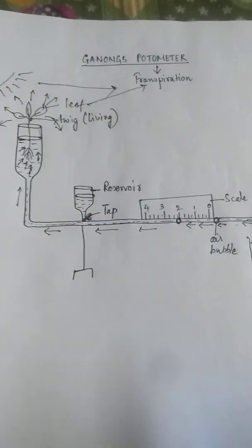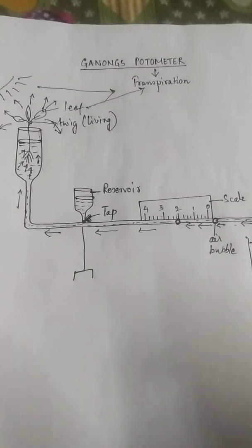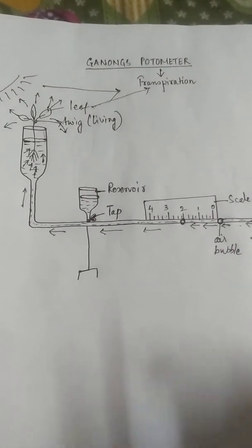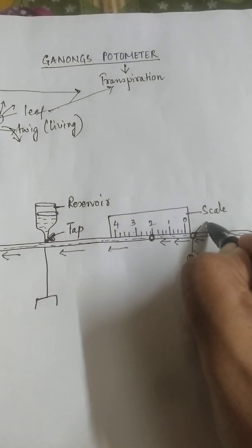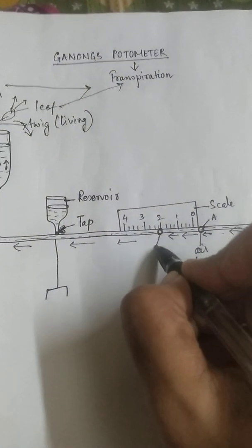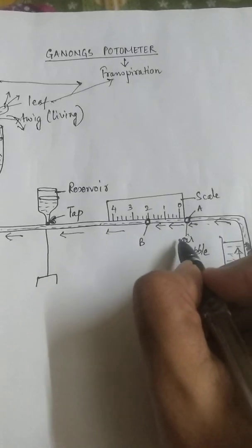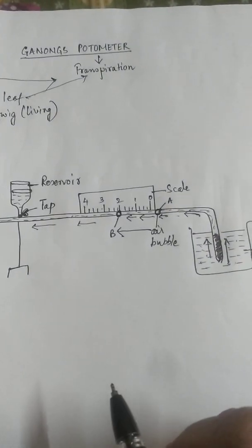Then I stop this experiment. So I can easily find the rate of the transpiration. Now one thing the air bubble getting moved from the say this is position A and this is position B. So the air bubble is moving from position A to position B. Why is it moving?